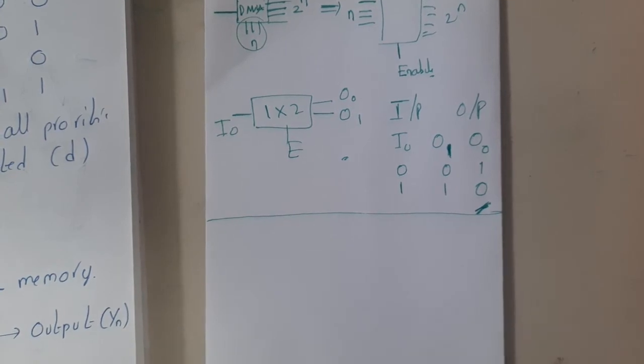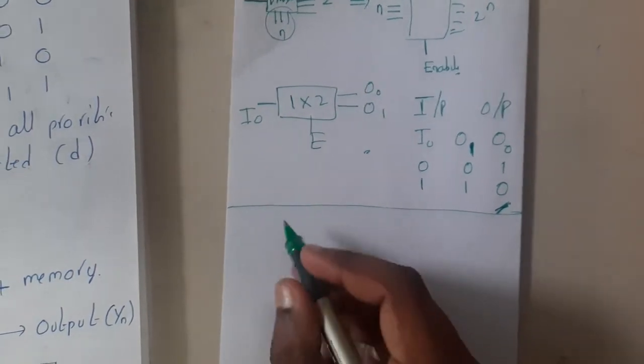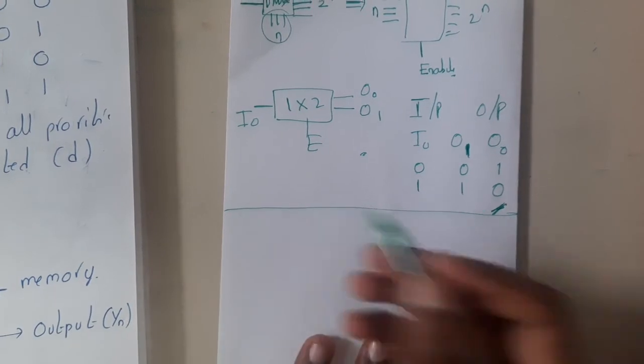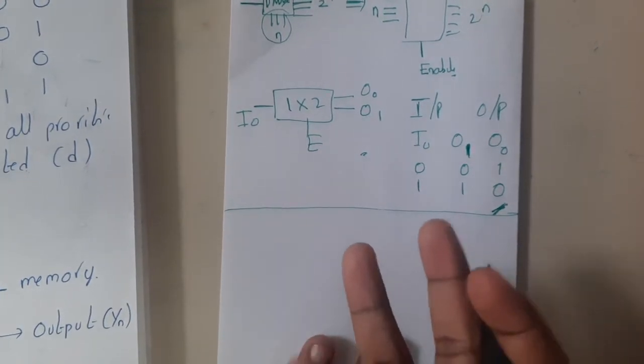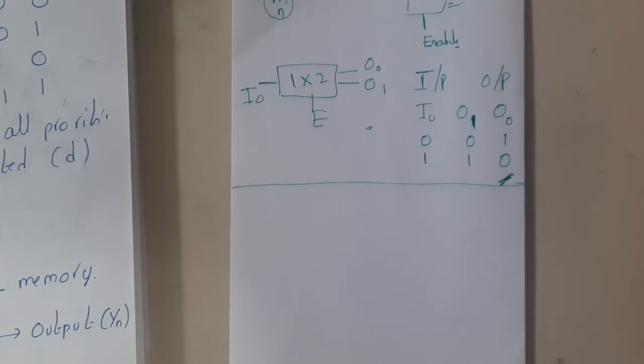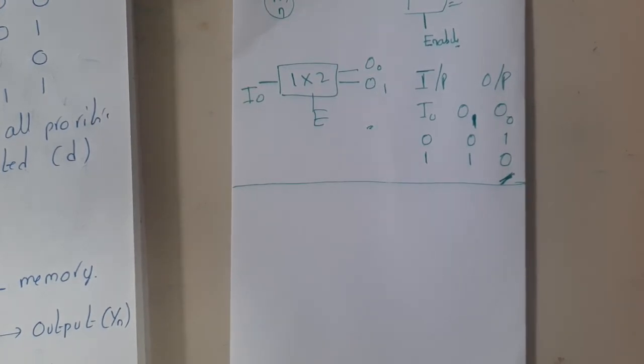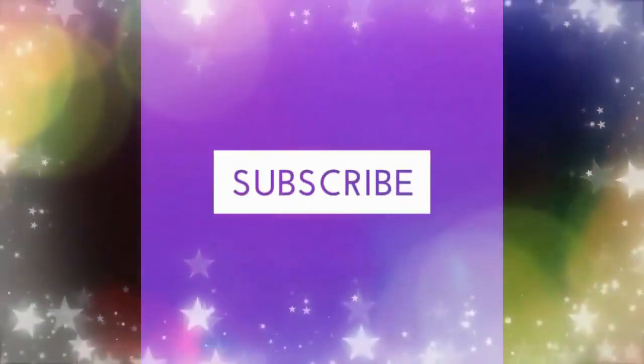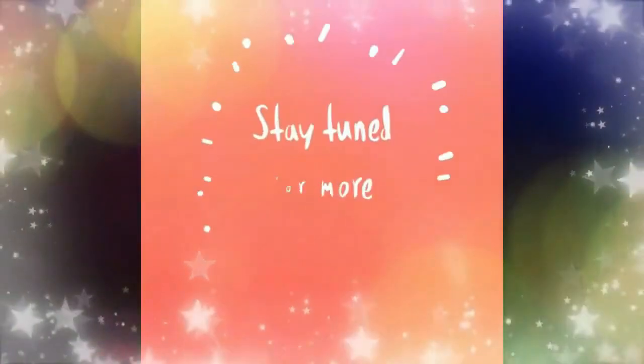This is all about decoder. In the next lecture let us discuss about encoder. Now you can say what is encoder: encoder is a friend of multiplexer. I hope everyone got a clear idea. In the next lecture let us continue with the encoder. Thank you. Like, share and subscribe for more awesome videos like this.